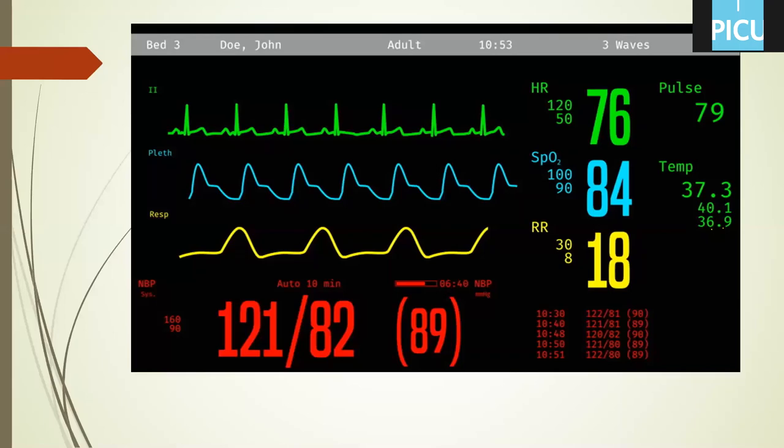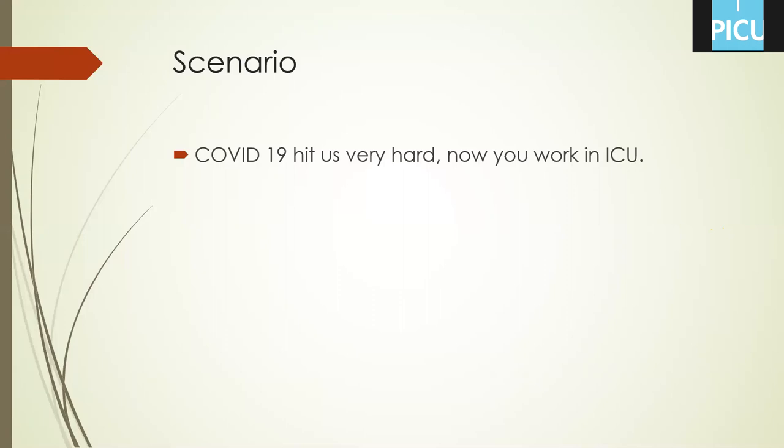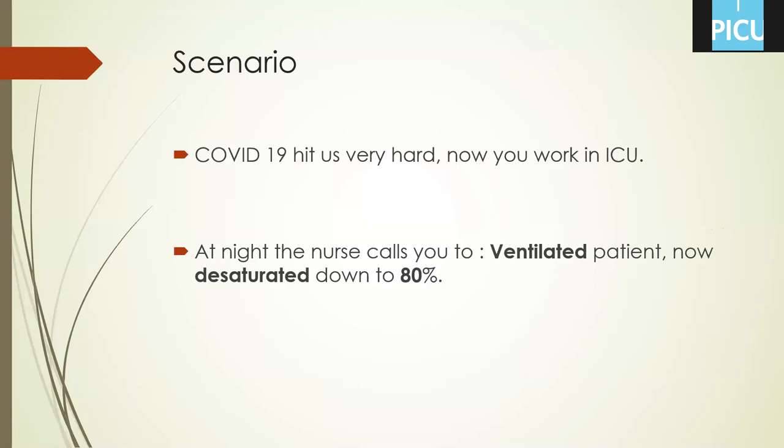We all know that COVID-19 is hitting us very hard, and now we'll imagine that you were pushed to work in the ICU. You are on your first night and the sister is calling you: 'Please doctor, come — Room 1, patient on mechanical ventilation is desaturating down to 80.' So what do you expect? What causes are expected and how to manage?